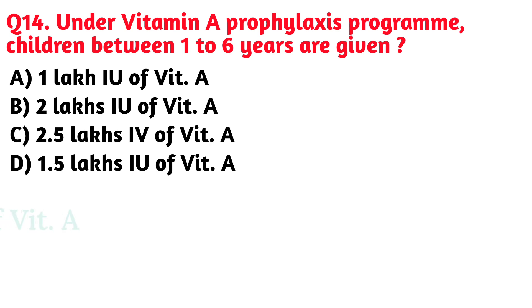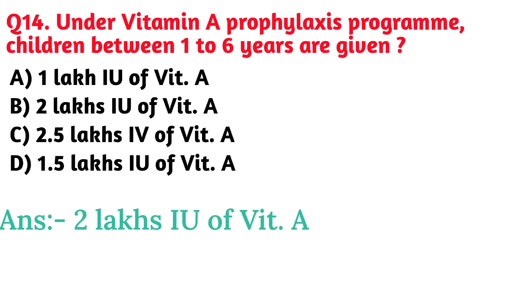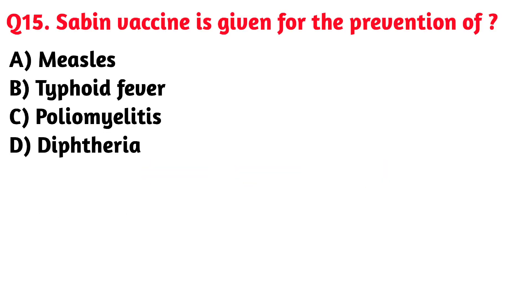Next question: Under vitamin A prophylaxis program, children between 1 to 6 years are given. Option B. 2 lakh international units of vitamin A is the correct answer.